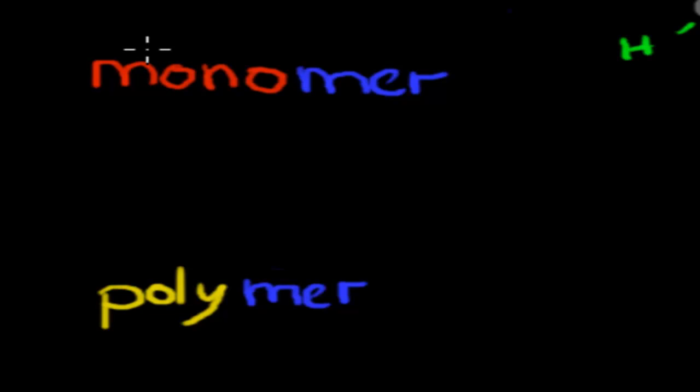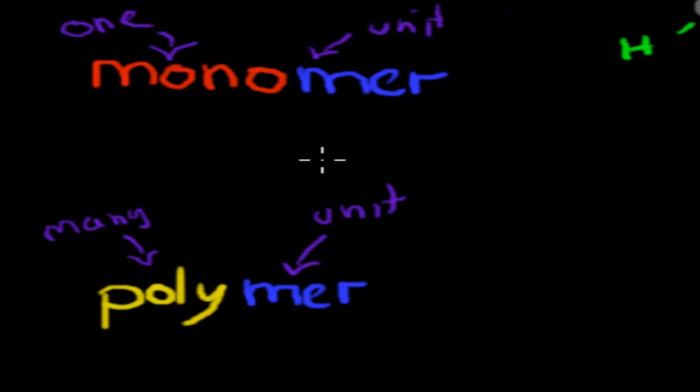Mono and mer, they both come from the Greek. Mono means one and mer means unit. Poly also comes from the Greek, means many, and mer again means unit. So what you can imagine is a monomer is something that only has one unit. A polymer is if you have lots of monomers attached to each other, one monomer after a row in a chain to make a polymer.